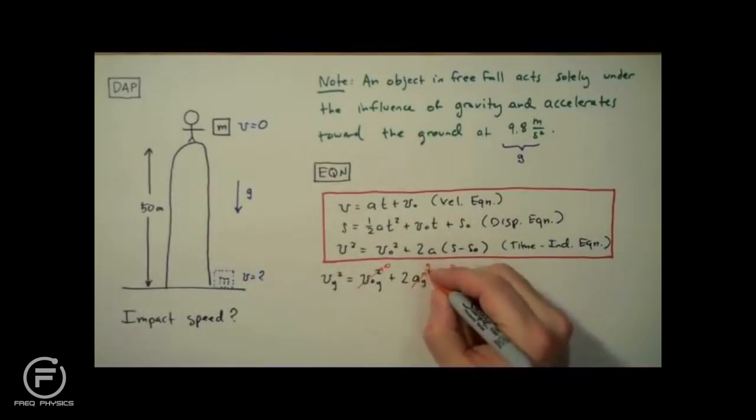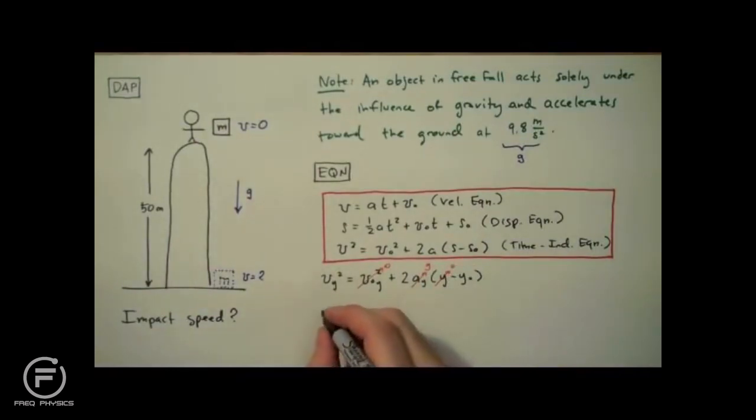And for simplicity's sake, I'm going to set ay to g. Okay, now that we have some of the terms out of the way, we're going to rewrite our equation. Vy is equal to 2 times g times negative y zero. Don't forget that negative sign.